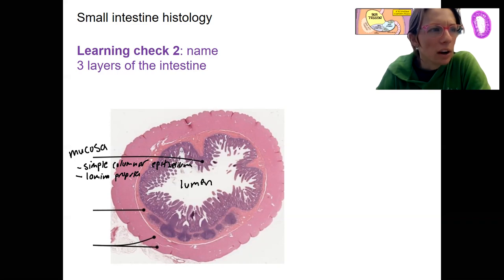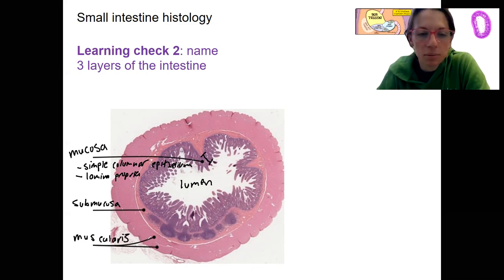Then we've got our submucosa, that's this pink here, so this is our mucosal layer. Submucosa, we're going to have some glands in there that we'll talk about. You can see some specialized lymphoid tissue here. Then we've got our muscular layer. Muscularis externa is what this is. There is a couple of different layers of muscle.